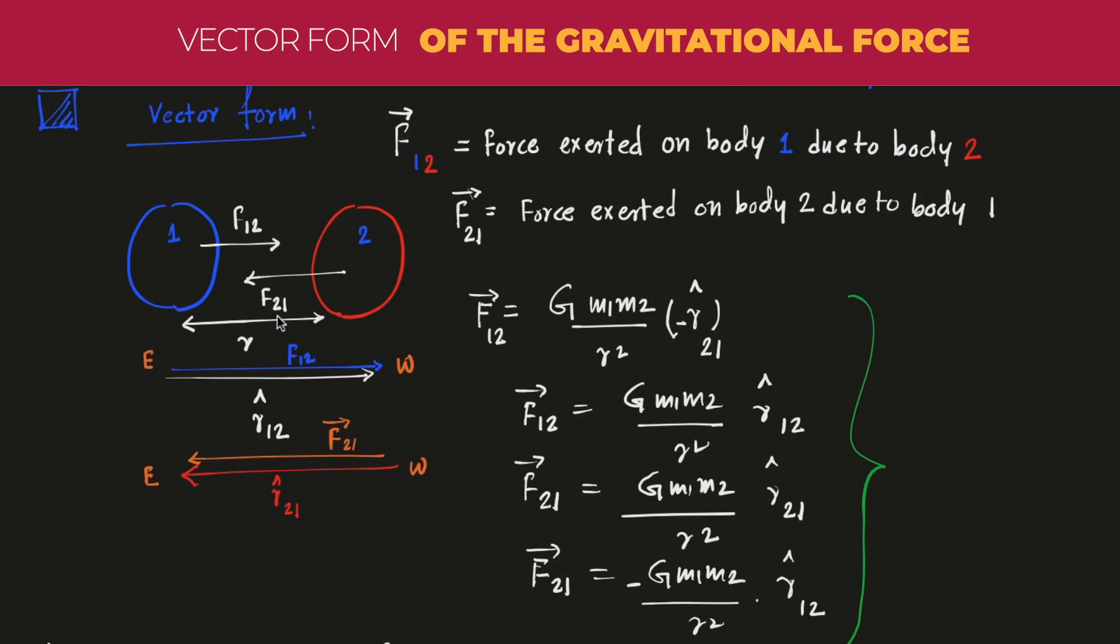G m1 m2 by r squared. This value will be similar for both of the cases, but here I have written r̂21. r̂21 minus, minus r̂21.